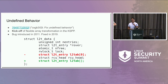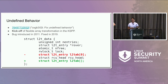Just move the array to the end of the structure and transform it into a flexible array member. This was the kickoff for the flexible array transformations in the kernel self-protection project — the moment we realized how important it was. This bug was introduced in 2011 and we fixed it in 2019.